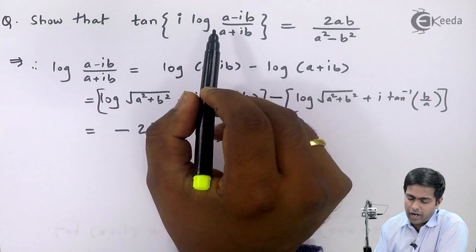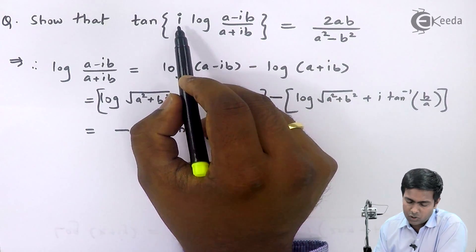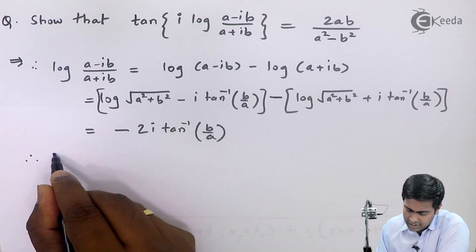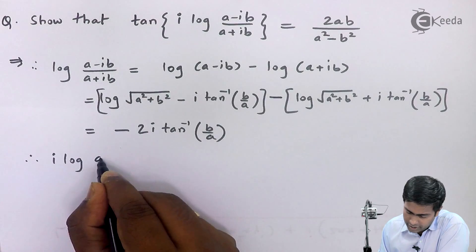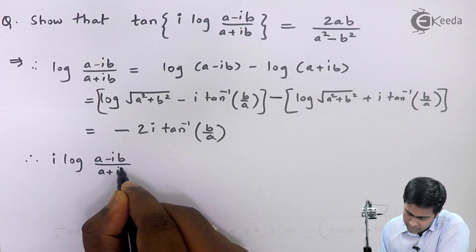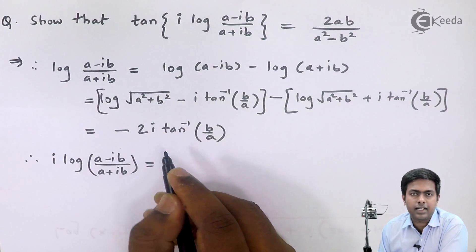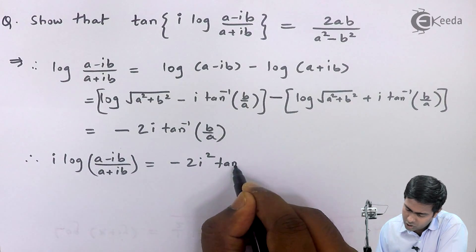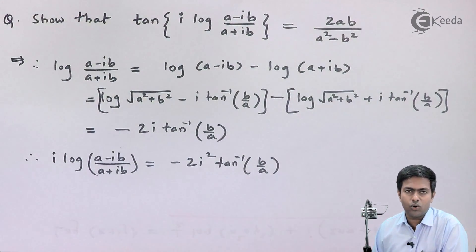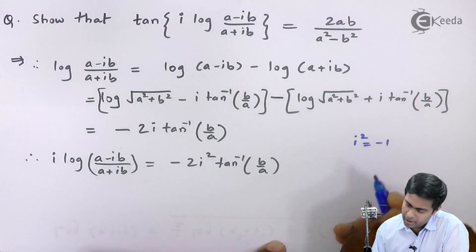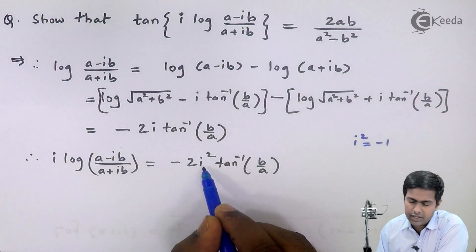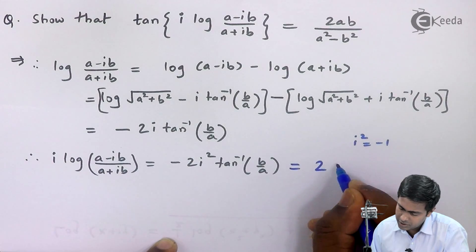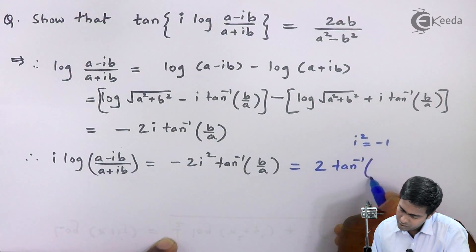Now we multiply both sides by i. The left-hand side becomes i·log((a − ib)/(a + ib)), and the right-hand side becomes −2i²·tan⁻¹(b/a). Since i² = −1, we have −2·(−1) = +2, giving us 2·tan⁻¹(b/a).